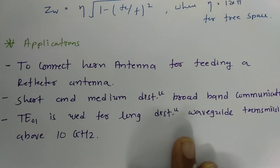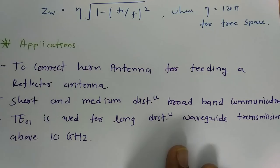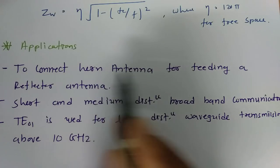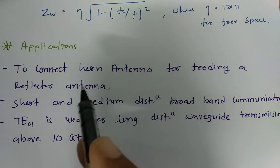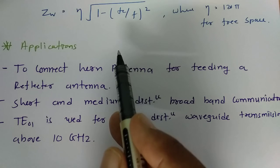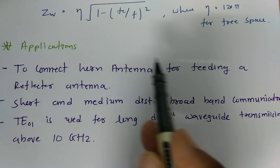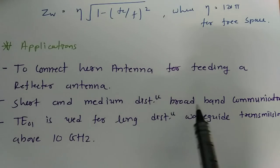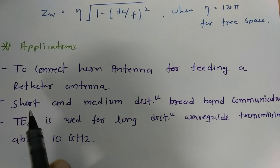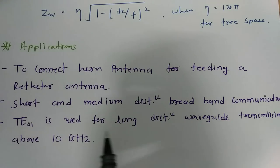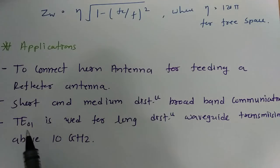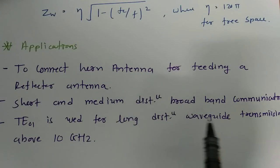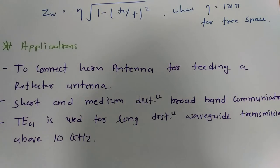Applications of circular waveguide include: connecting circular waveguide to feed a reflector antenna via a horn antenna; use for short and medium distance broadband communication; and using the TE01 mode for long-distance waveguide transmission around 10 GHz.